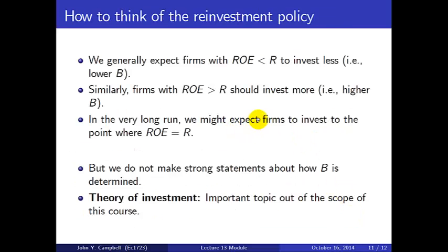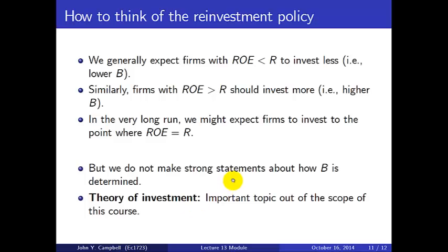What comes out of this framework is that firms with low profitability should invest less, and firms with high profitability should invest more. In the very long run, as firms keep investing, they may exhaust projects with ROE greater than R, and we might expect ROE to equal R. However, that takes us into the theory of investment, which is beyond the scope of this course. If you take corporate finance, you'll certainly learn more about that.